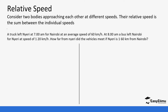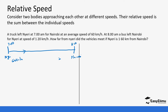So a truck left Nyeri at 7. I'm going to draw a makeshift diagram of Nyeri with a line. So this is Nyeri at 7. The truck left Nyeri at 7 at an average speed of 60 km/h. At 8, a bus left Nyeri at a speed of 120 km/h. Remember, this truck that had already left Nyeri at 7 o'clock has already covered a certain distance by the time this bus is leaving.